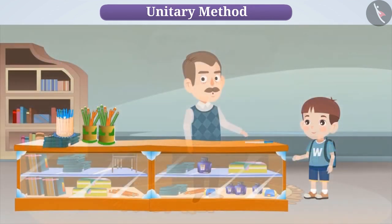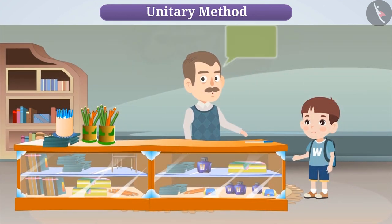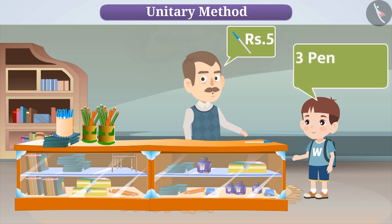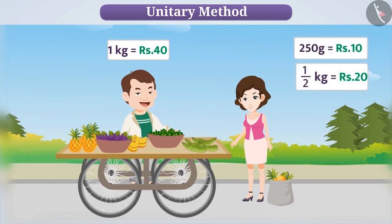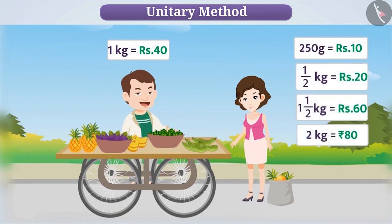Let us understand it with some more examples. When you go to a shop, the shopkeeper tells you the cost of an object. On the basis of this, depending on how many objects you want to buy, you can find out the total cost — here, you are using the Unitary Method. When you go to buy vegetables, the shopkeeper tells you the cost of 1 kg. On the basis of this, you find the cost of 250 grams, half a kg, one and a half kgs, 2 kgs, or as much as you want. Here also, you use the Unitary Method.